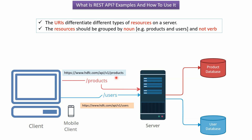The URIs differentiate different types of resources on the server. When the server receives a URI containing 'products', the server will communicate to the product database for any product-related operations. And when the server receives a URI ending with 'users', then the server will talk to the user database for any user-related operations.